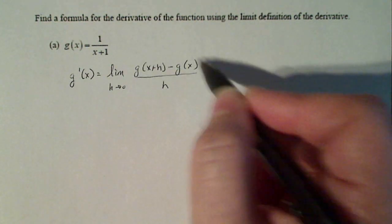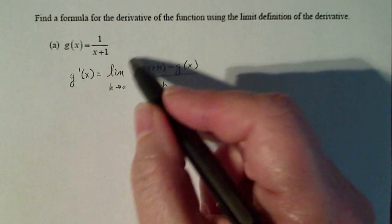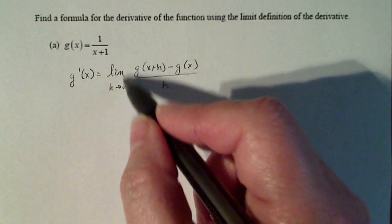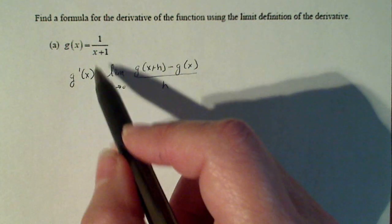We know this is a difference quotient, the average rate of change. We can estimate instantaneous velocity with it, but when we put the limit in front of it, that actually finds us the exact equation for the derivative of the original function.